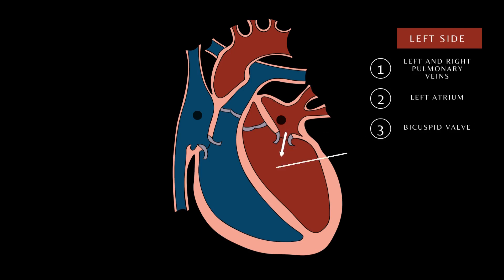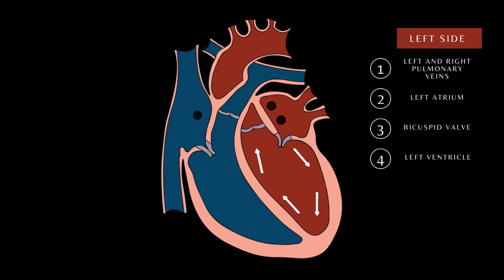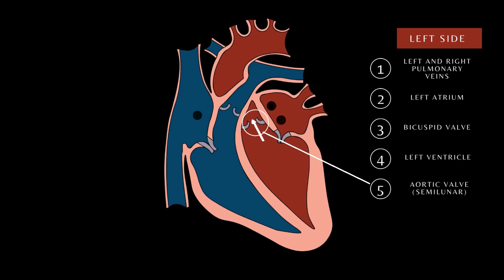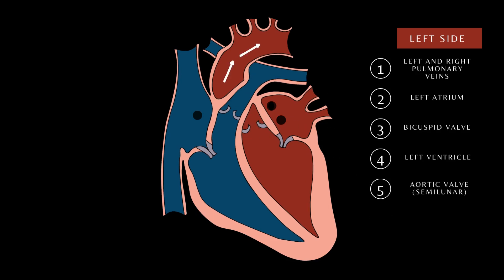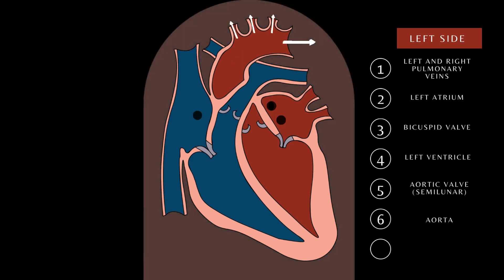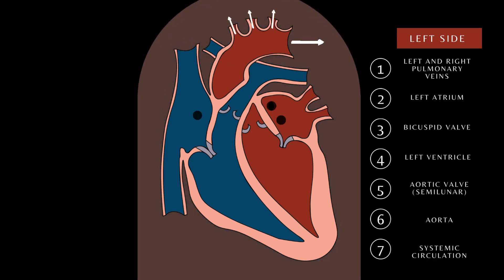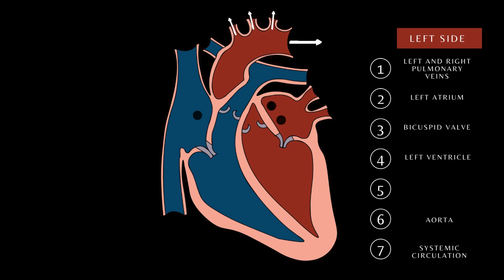Blood enters the left ventricle. Ventricular contraction pushes the blood through the aortic valve. During ventricular contraction, the aortic valve is open, while the bicuspid valve remains closed to prevent the backflow of blood into the left atrium. Oxygen-rich blood enters the aorta and then is redistributed to the systemic circulation where it is utilized by tissues and organ systems for cellular respiration.